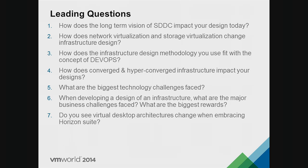The answer: the network. Look at network virtualization — it's the network. Absolutely well done. The thing changing most when it comes to the SDDC is the network: network virtualization but also network topologies. We've got cross-datacenter vMotion, cross-virtual-switch vMotion, long-distance vMotion, hyper-converged architectures, micro-segmentation, stretch cluster environments, tunneling — everything that's changing at the moment is changing in the network.